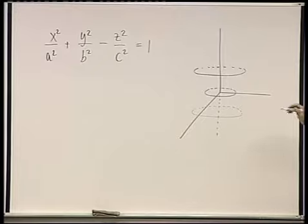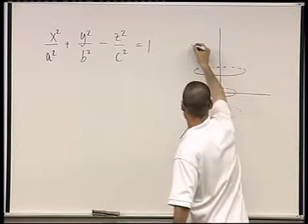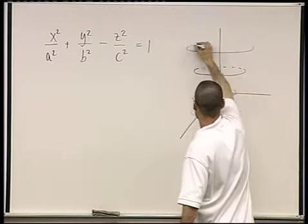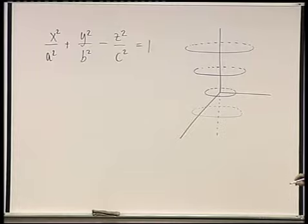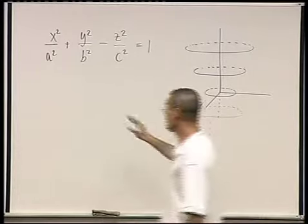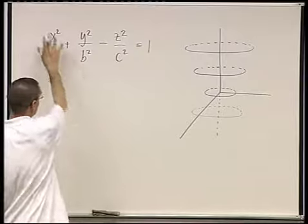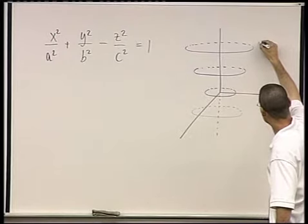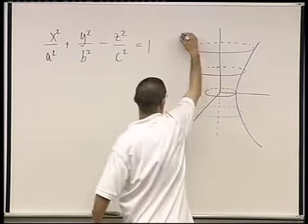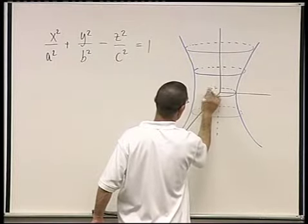Right away you see this doesn't resemble the ellipsoid at all. What happens when we plug in x = 0? When x = 0 we get y²/b² − z²/c² = 1, which is a hyperbola. The minus is here, so it's a hyperbola of this form, and when x = 0 we get something like this hyperbola.